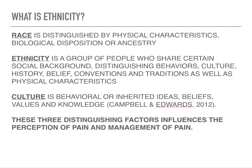So what is ethnicity? Race, first of all, is distinguished by physical characteristics, biological disposition, or ancestry. Ethnicity is a group of people who share certain social background, distinguishing behaviors, cultures, history, beliefs, conventions, and traditions, as well as physical characteristics. Culture is behavioral or inherited ideas, beliefs, values, and knowledge. These three distinguishing factors influence the perception and management of pain.